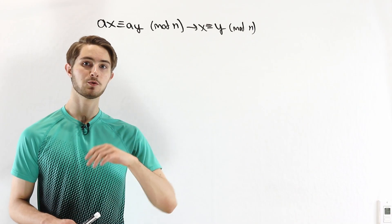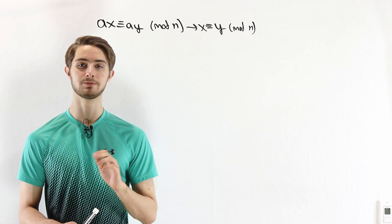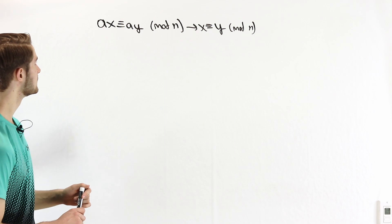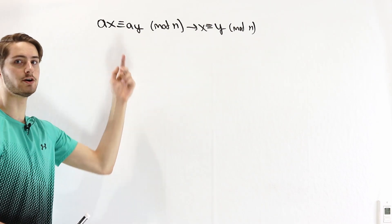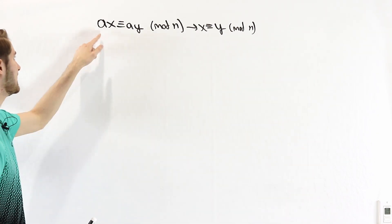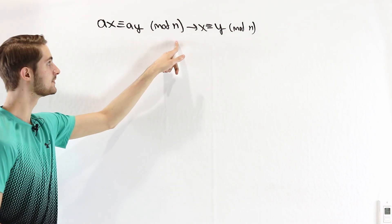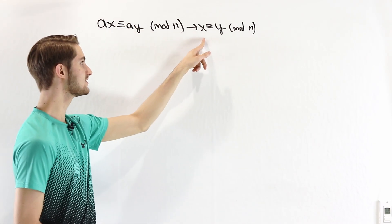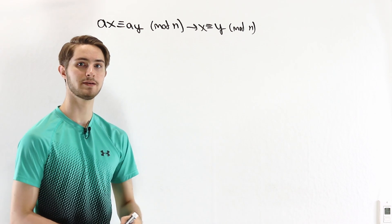We are going to talk about when you can cancel numbers on both sides of a congruence. If we have some constant a on both sides, so ax ≡ ay mod n, can we say that x ≡ y mod n?